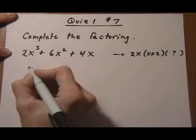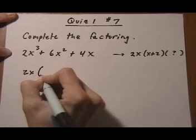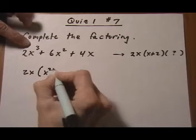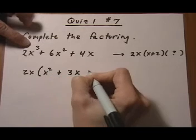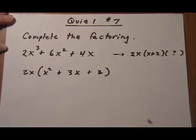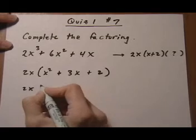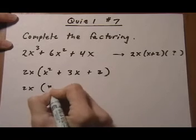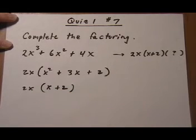So if I pull out the GCF of 2x then we're left with x squared plus 3x plus 2. And now we can do trinomial factoring. We know that one of our binomials will be x plus 2.